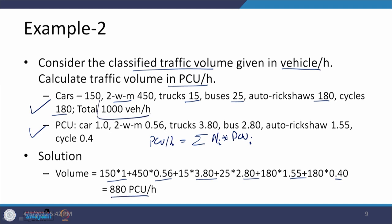Instead of 1,000 vehicles per hour, we get 880 PCU per hour. If there is a higher proportion of smaller vehicles, the PCU value will be less than the vehicle count. If larger vehicles dominate, the PCU value may exceed the raw vehicle count. This is just one indicative condition, but it gives an idea of what is happening on that road.